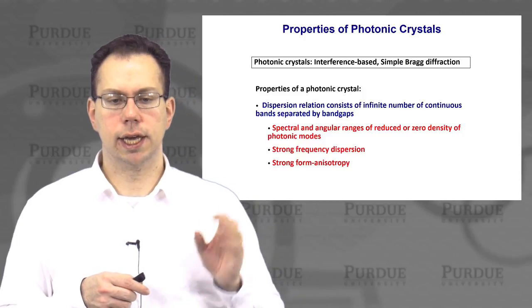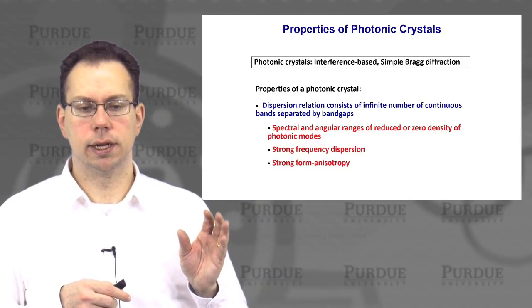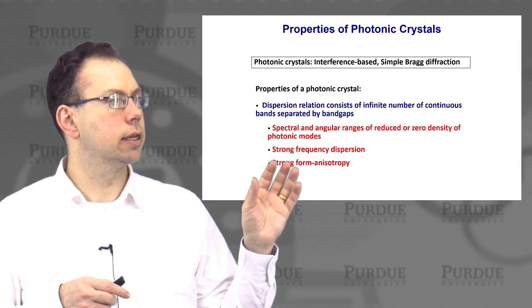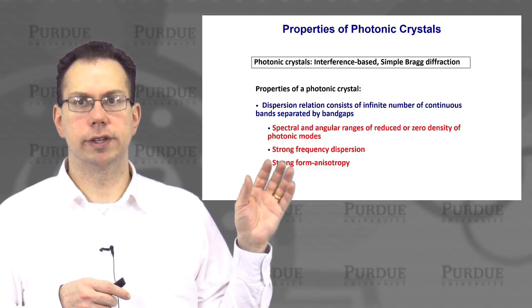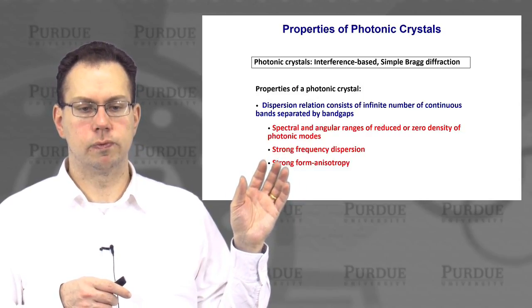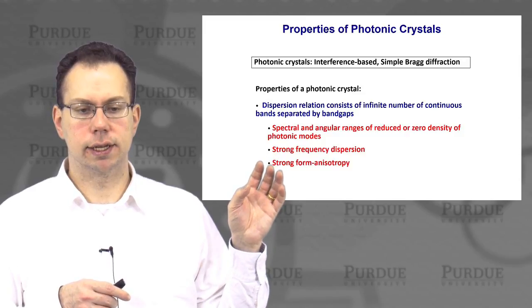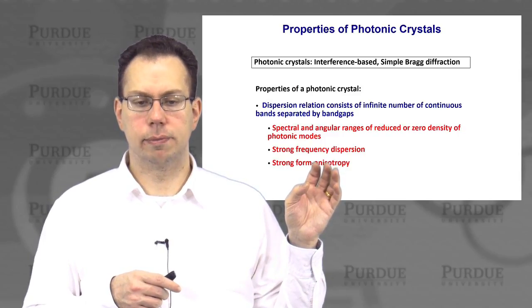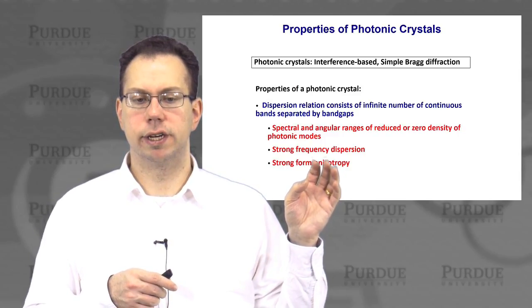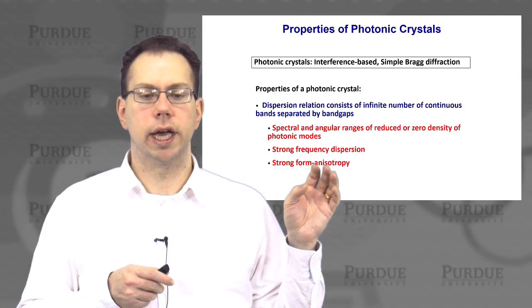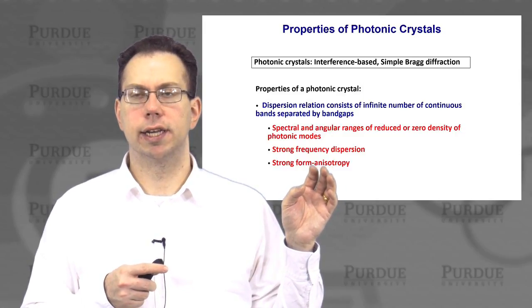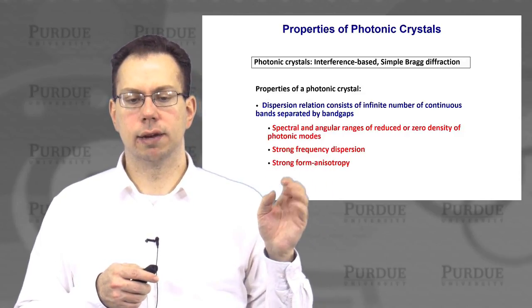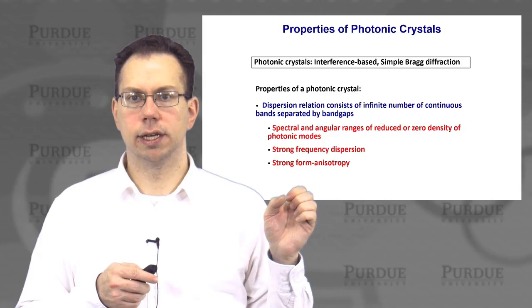So basically the key takeaways or properties that we care about going forward are going to be that there's a continuous band basically for frequency versus the wave vector. And there are certain ranges where frequencies are essentially fully reflected. And that's what we call the bandgap. So that means we have reduced or zero density of photonic modes. And we also have a strong dependence in terms of direction of propagation on frequency and then potentially anisotropy as well.